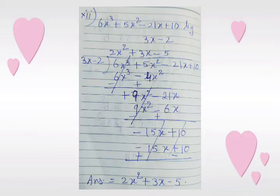We copy down plus 10. We multiply 3x minus 2 with minus 5 and get minus 15x plus 10. We change the sign of the last line and then we can cancel both terms. The answer is 2x squared plus 3x minus 5.